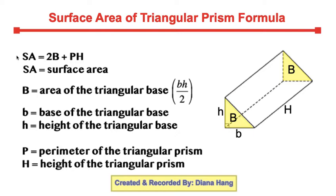Let's look at what our variables represent. SA represents surface area. Capital B is the area of the triangular base.